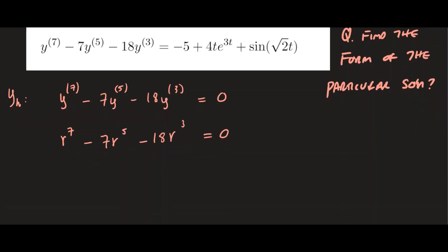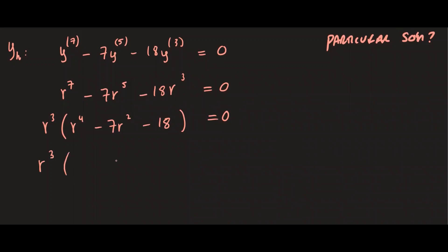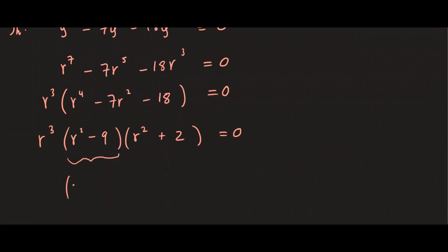We use factoring to find the roots of this polynomial. We have r cubed times r to the fourth minus seven r squared minus 18 equals zero. The parentheses portion can be factored further — we still have r cubed outside, and we can factor the inside as r squared minus nine times r squared plus two, which gives us r plus three times r minus three, with r cubed and r squared plus two.